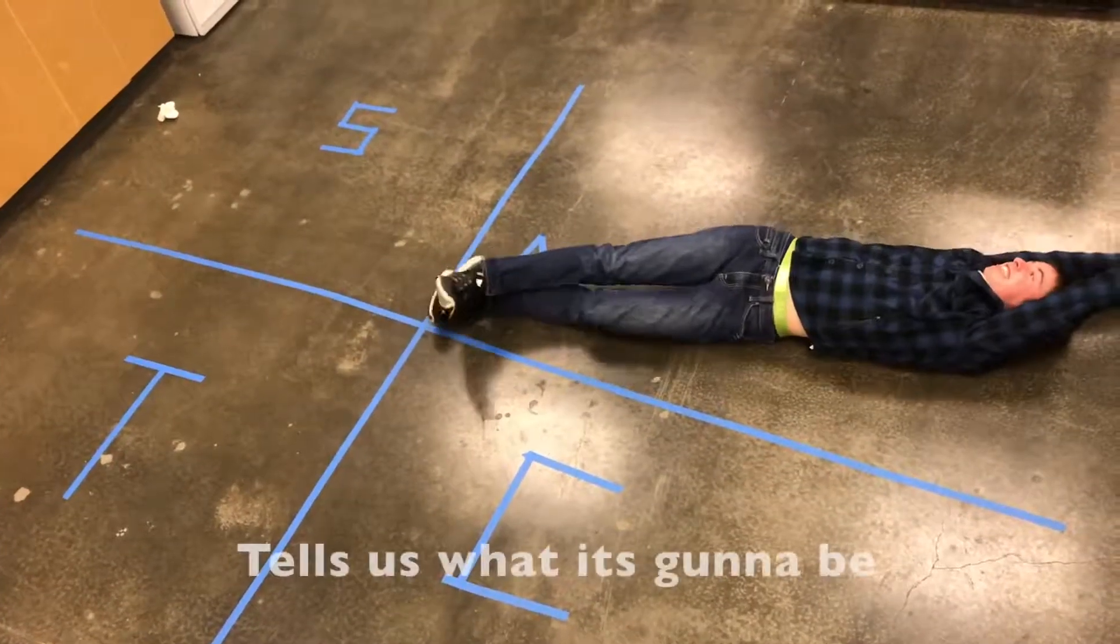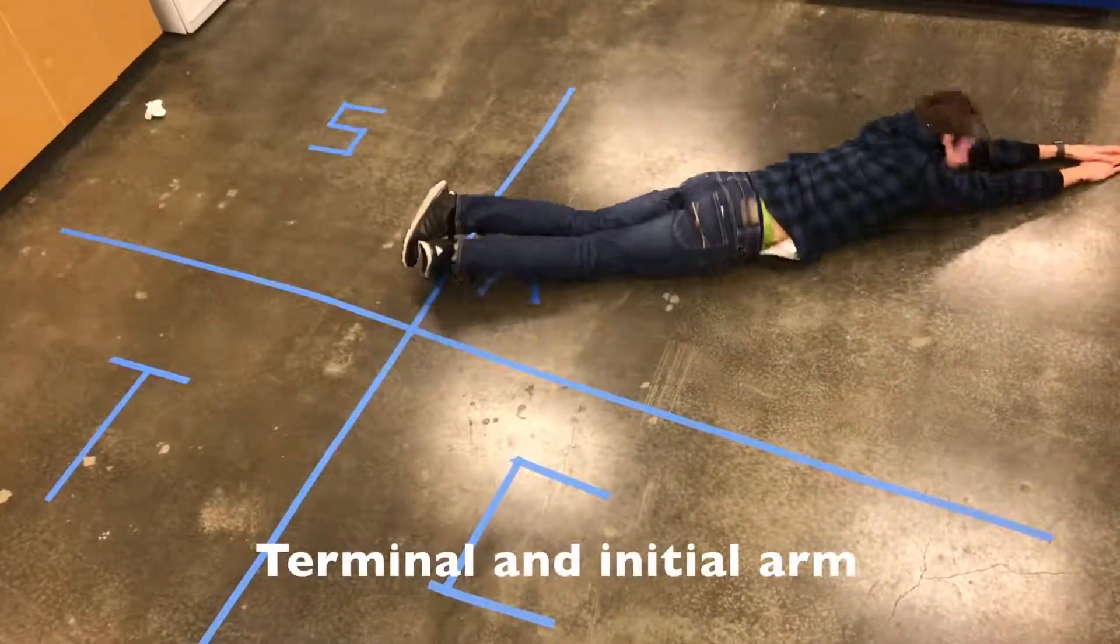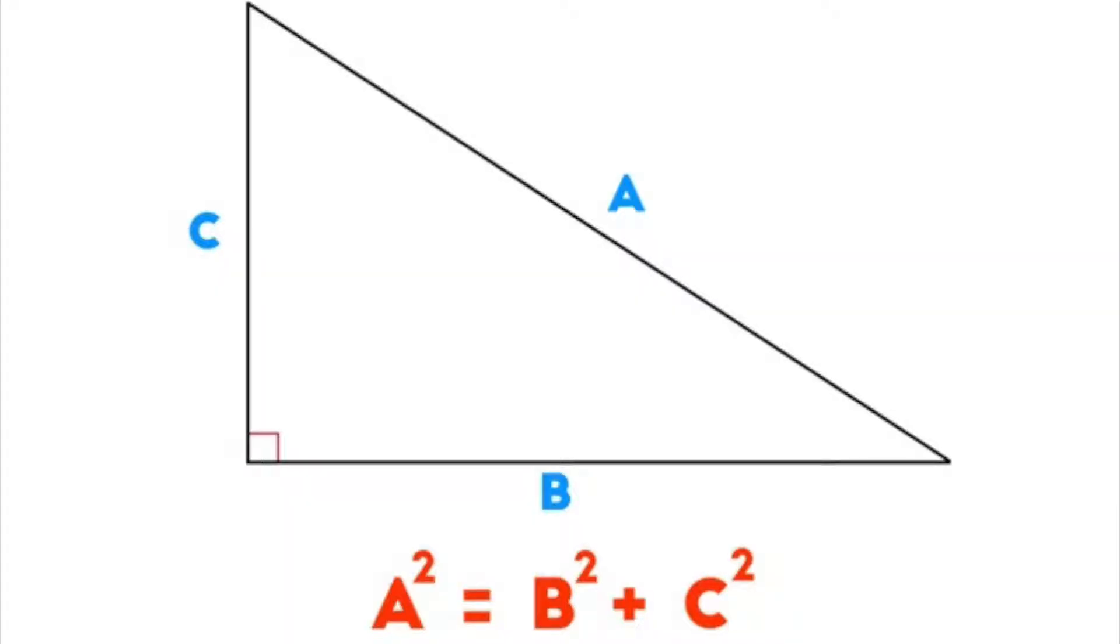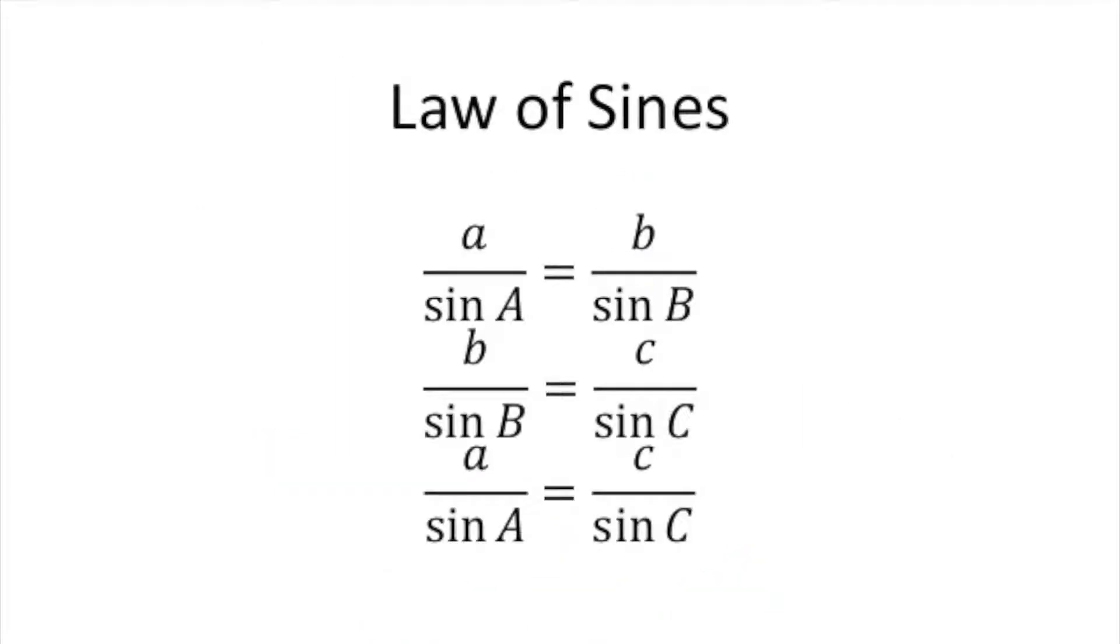C A S T, C A S T tells us what it's gonna be. Terminal and initial arm in standard position before the alarm. Pythagorean theorem is all you need to know, cause A squared plus B squared equals C squared, yo. The sine law is the new sequel cause sine over A, B, C are equal.